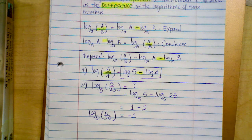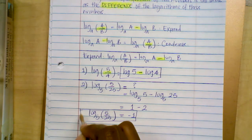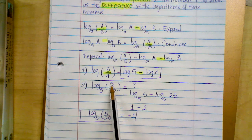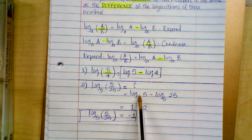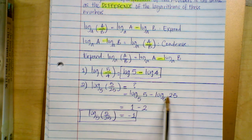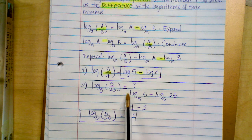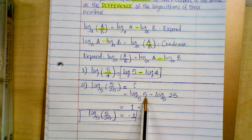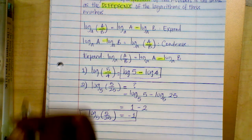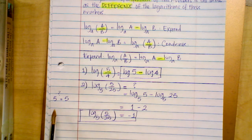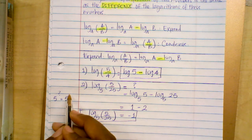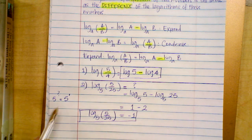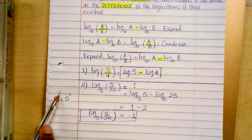The answer is negative one. The number within the log is a quotient, so to expand, you subtract the log of the numerator minus the log of the denominator. Log base five of five is asking: what exponent do you give to base five so that the answer is five? The answer is one, because five to the first power is five.